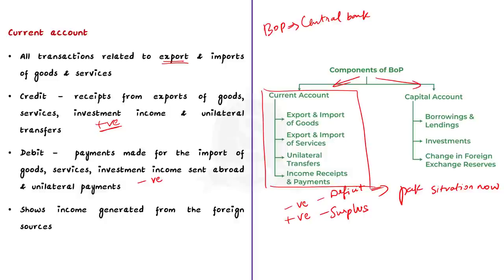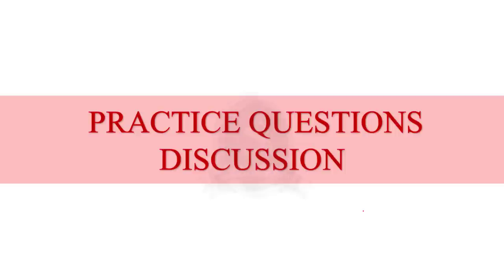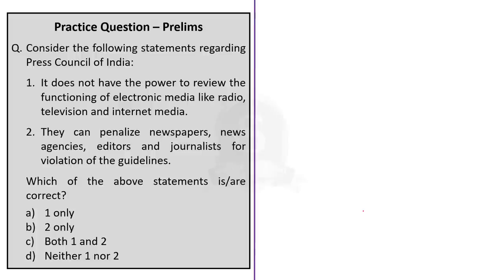Through this discussion, we have seen about the term balance of payment, its two components, and particularly about current account. Now let's move on to the next part of our Hindu daily news analysis. Today, I have taken five different questions for our discussion — three will be discussed by me and two will be quiz questions for you. The first question is regarding the Press Council of India, with two statements to evaluate. Statement one: it does not have the power to review the functioning of electronic media like radio, television and internet media.